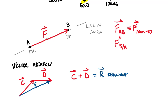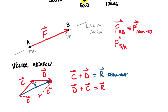It turns out I could also flip the order and say D plus C is also equal to R. Using dotted lines to show D-prime and C-prime — where C-prime is parallel to C and D-prime is parallel to D, both with the same lengths — D-prime plus C-prime also equals R. Since the order doesn't matter, we can say that vector addition is commutative.